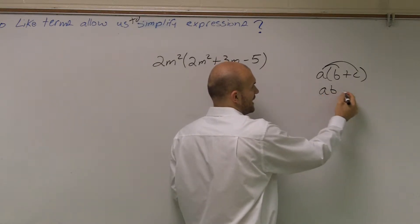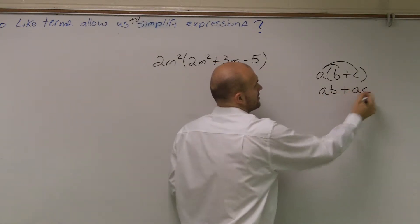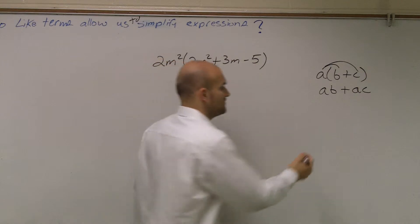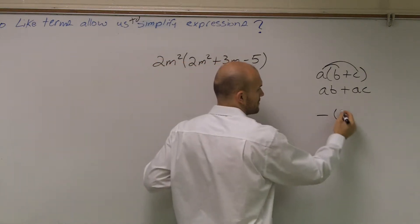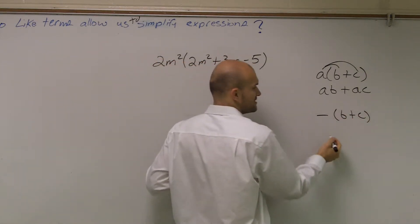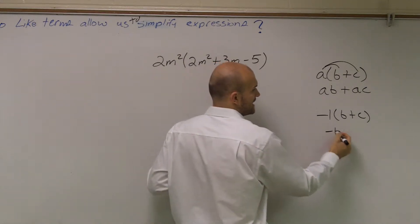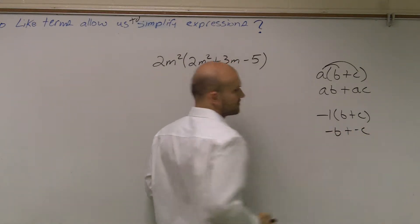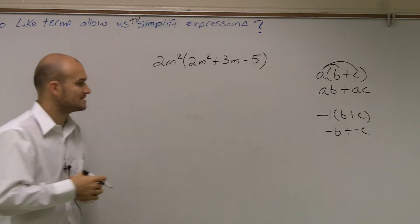So now this turns into AB plus AC. Even if that was a negative, this represents the same thing as like a negative 1, right? So that'd be negative B plus negative C. That's a very common one that gets mistaken.